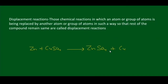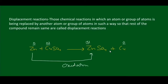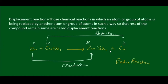Here we observe that whenever zinc reacts with copper sulfate, it replaces copper metal from the copper sulfate solution, and zinc attaches in its place — showing that zinc is more reactive than copper. Now the oxidation numbers: oxidation of Zn in elemental form is zero. In CuSO₄, SO₄ has minus two charge, so Cu has plus two oxidation state. In ZnSO₄, SO₄ has minus two charge, so Zn becomes plus two. And Cu in elemental form has oxidation zero. So Zn goes from zero to plus two — increase — this is Oxidation. Cu in CuSO₄ goes from plus two to zero — decrease — this is Reduction. Both oxidation and reduction are occurring simultaneously, so this is a Redox Reaction. Displacement Reaction is also a Redox Reaction.